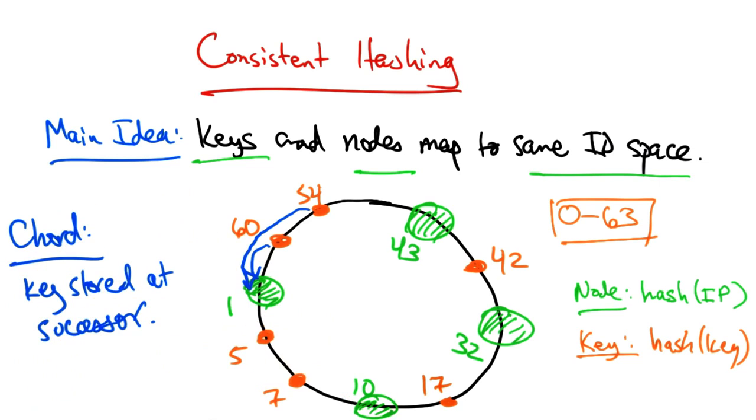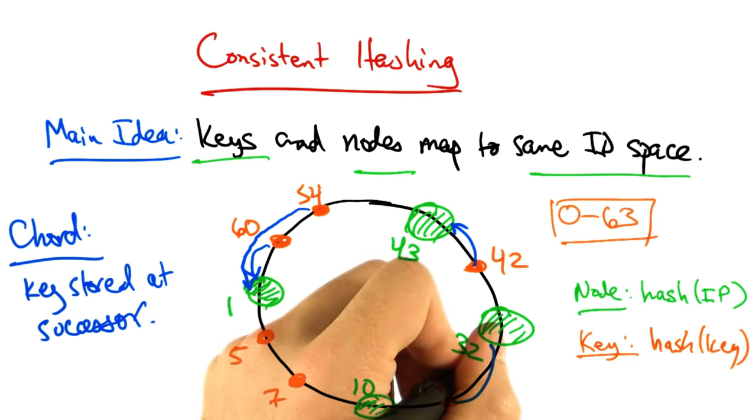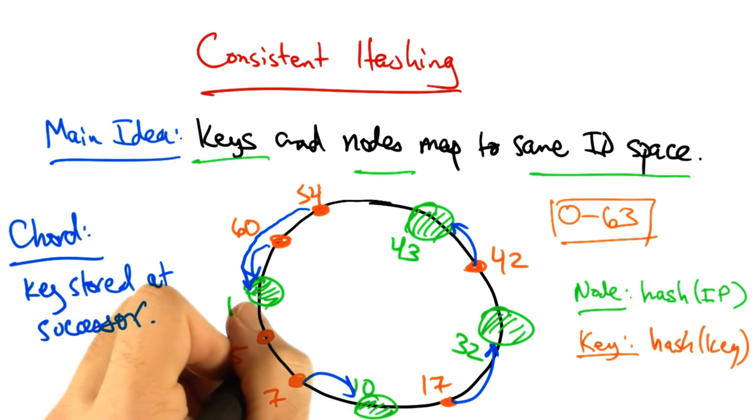Similarly, key 54, key 42 would be stored at node 43, key 17 at node 32, and keys 7 and 5 at node 10, and so on.